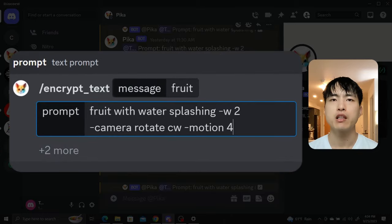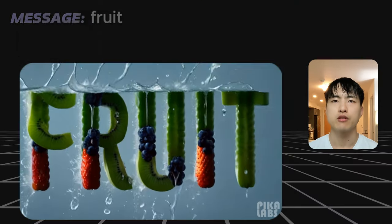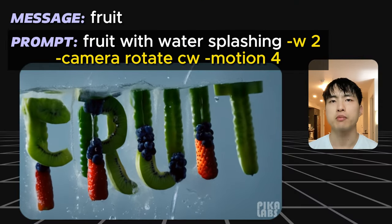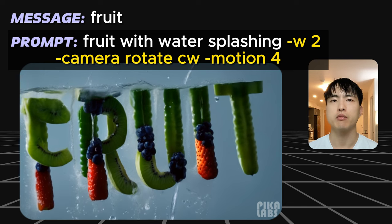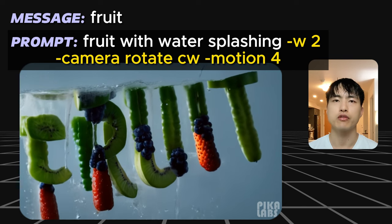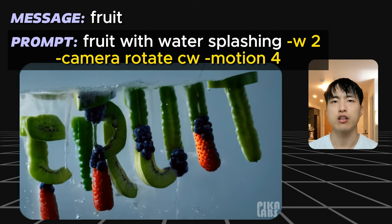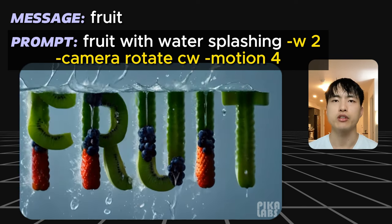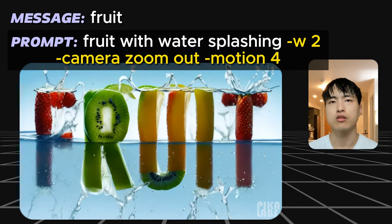To increase the amount of motion, add the dash motion parameter at the end of the prompt. It's a value between 0 to 4. Here I'm using the prompt of fruit with water splashing, dash w 2, dash camera CW, dash motion 4 for clockwise camera rotation and a large amount of motion. We can also try zooming in or zooming out.